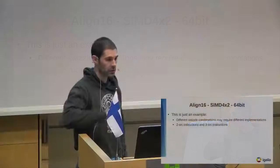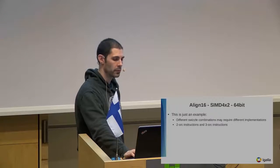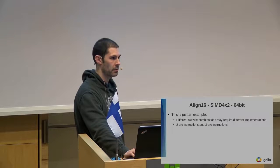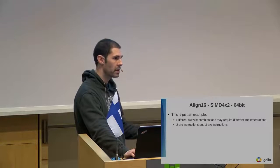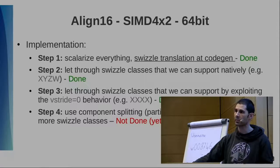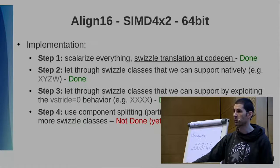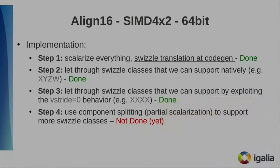We decided that trying to deal with all of these upfront would be difficult and would postpone having a functional implementation. So instead, we decided to scalarize everything first, and then build up from there and improve where it makes sense. Scalarizing everything eliminates the write mask problem completely — you only have one channel — and reduces swizzles to just four: X and Y translate directly; Z and W use the offset trick. That's it.